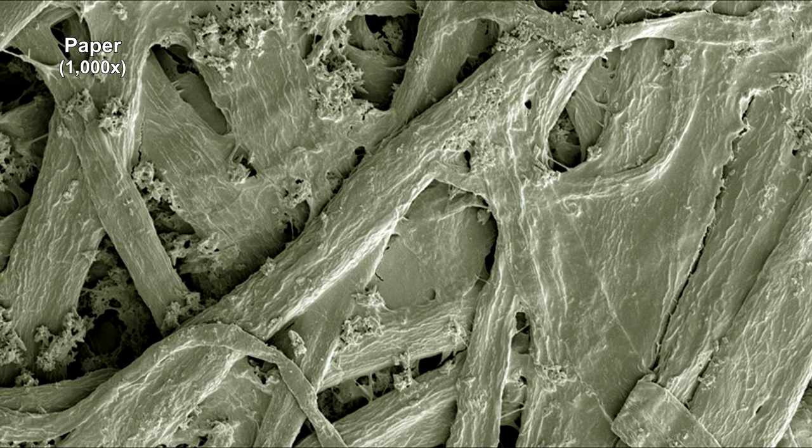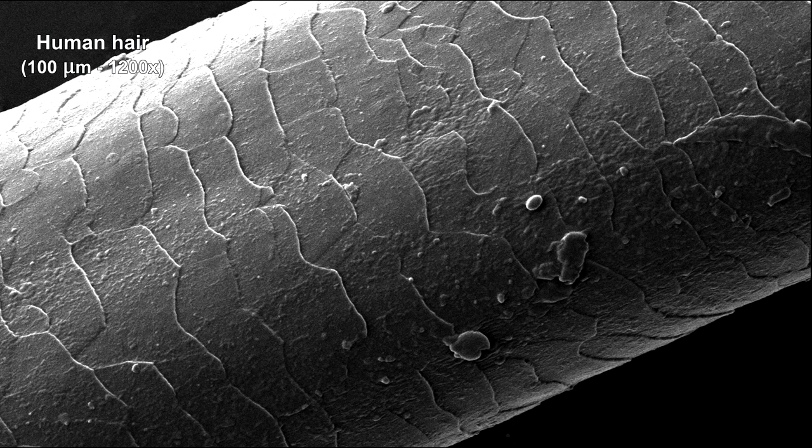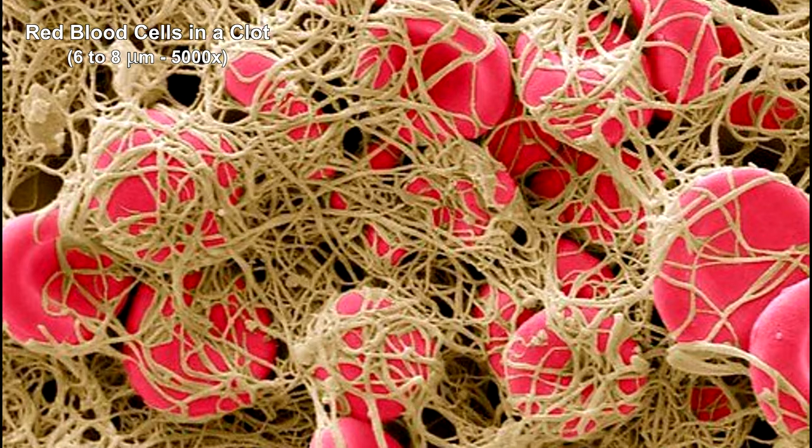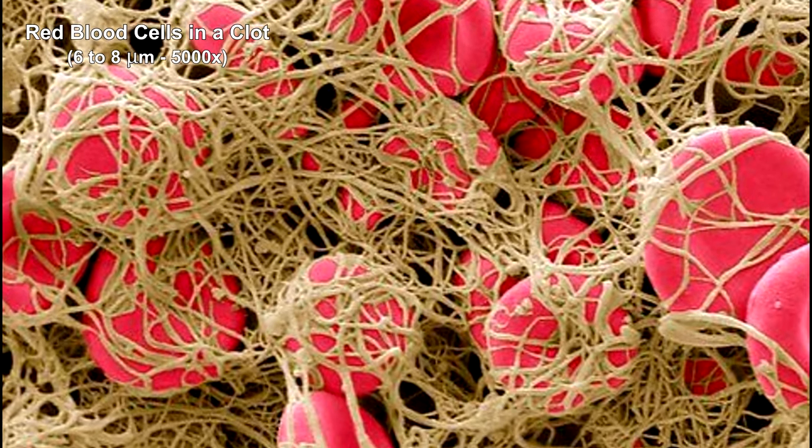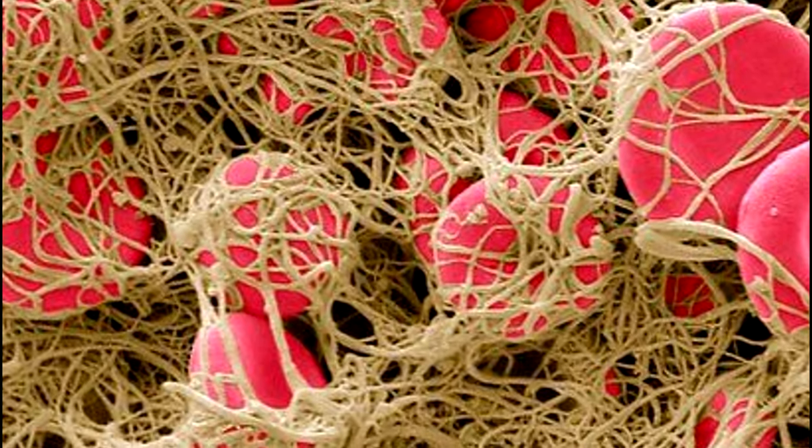Here's what a sheet of paper looks like at 1,000 magnification. Here's a human hair magnified 1,200 times. This is a micrograph of red blood cells clumped together with fibrin to form a blood clot.